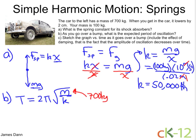It's you and the car. So for m, we want to plug in the total mass, that is, everything that's oscillating, which is the 700 kilograms of the car, plus you, which is 100 kilograms.